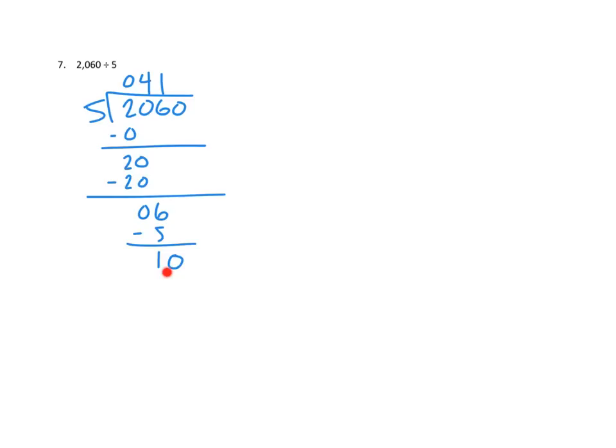And then we'll ask our same question, which is, how many ones times five would give us 10 ones? And that's a simple one. That's simply a two. Two ones times five is 10 ones. And that uses them all up. We have no remainder. So our remainder is zero. And our quotient appears to be 412.